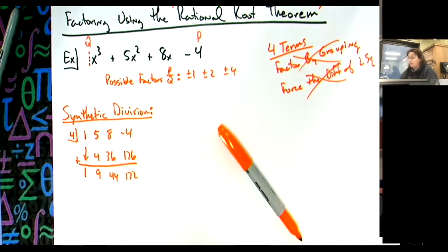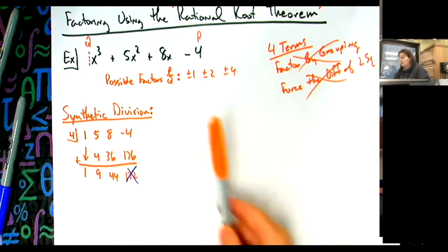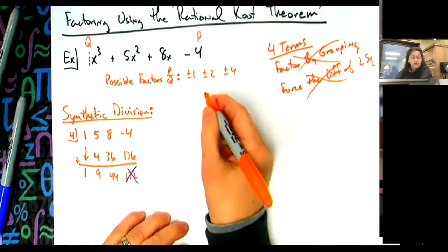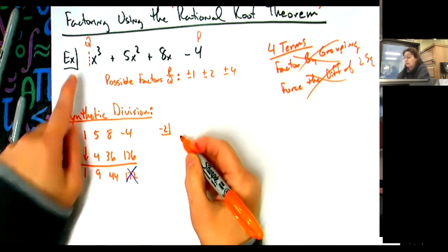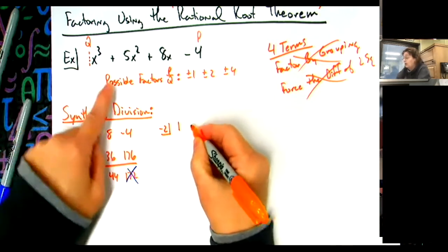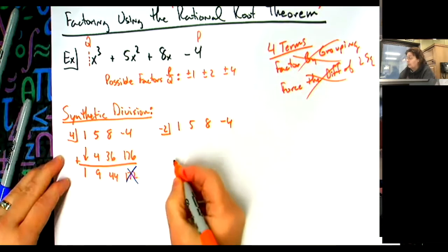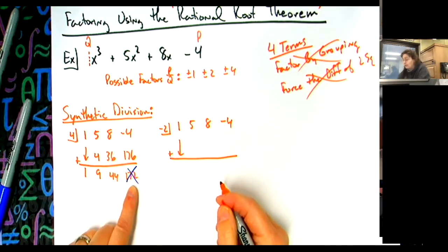I know I picked the right number when I get a zero remainder, and that's not zero, so picking four was the wrong guess. That's okay — I'm not going to get frustrated. I'll try again. This time let's pick negative two. I write down one, five, eight, and negative four — those are my coefficients for my original problem. I'm trying to get a remainder of zero.